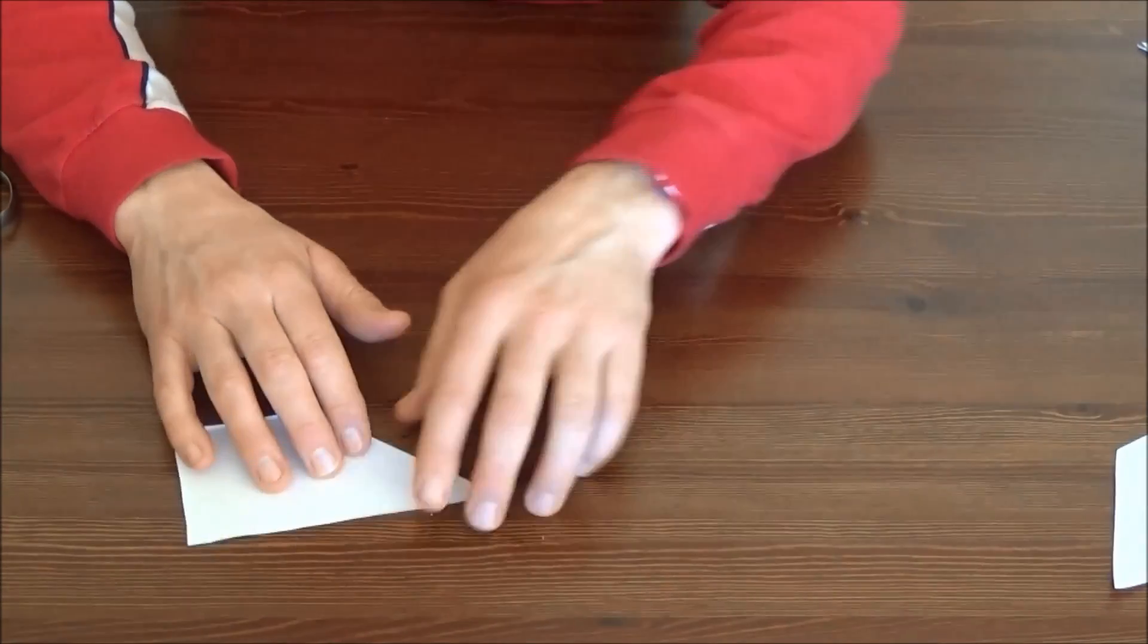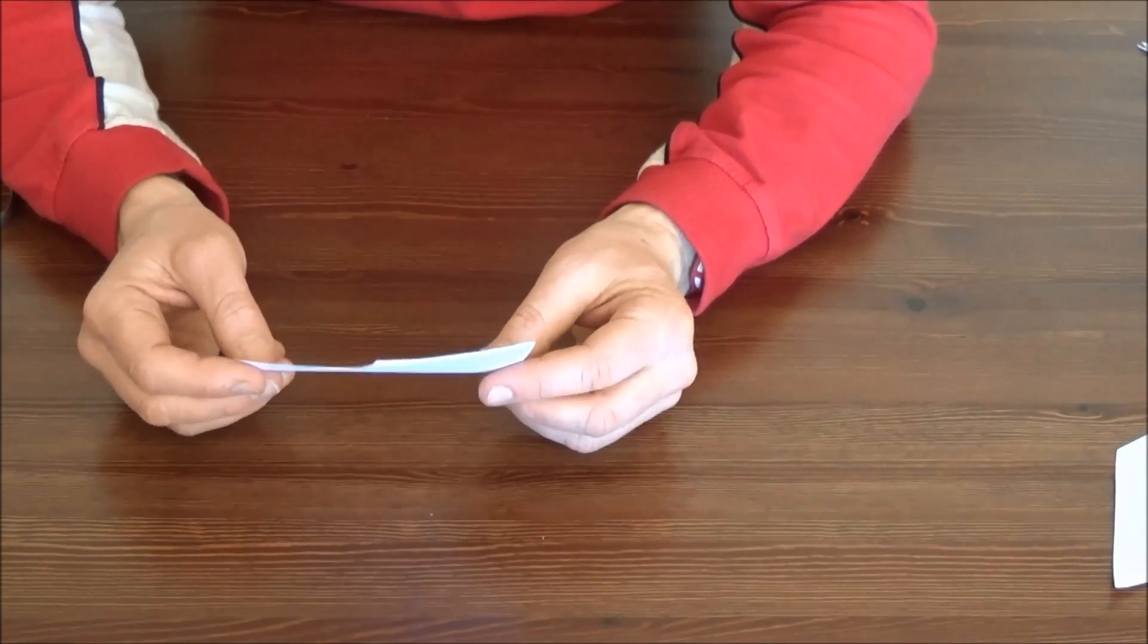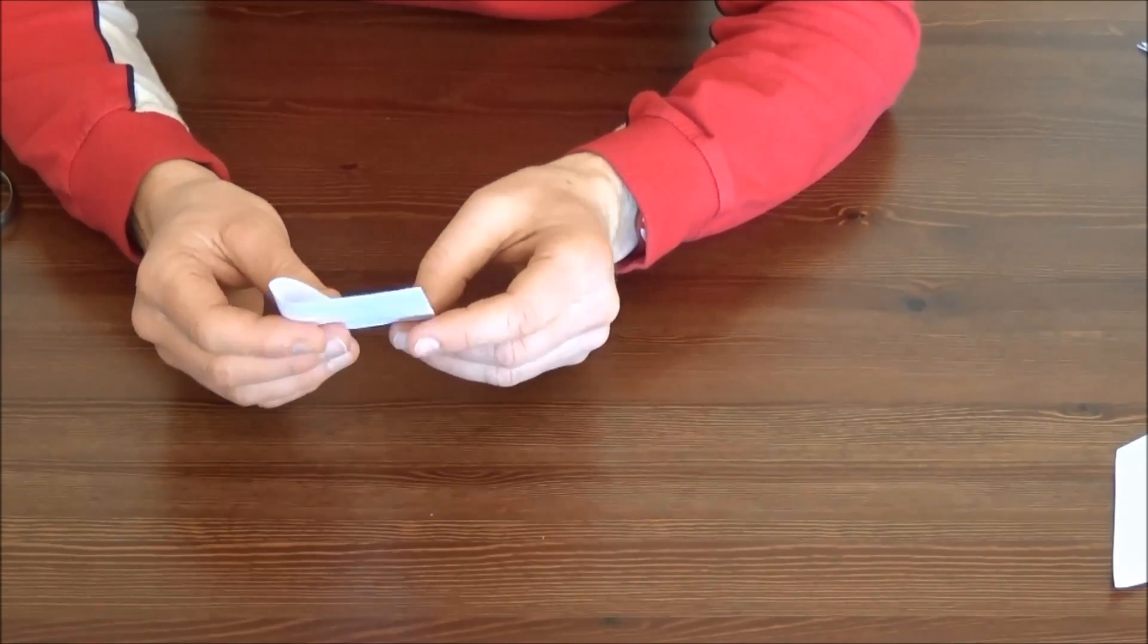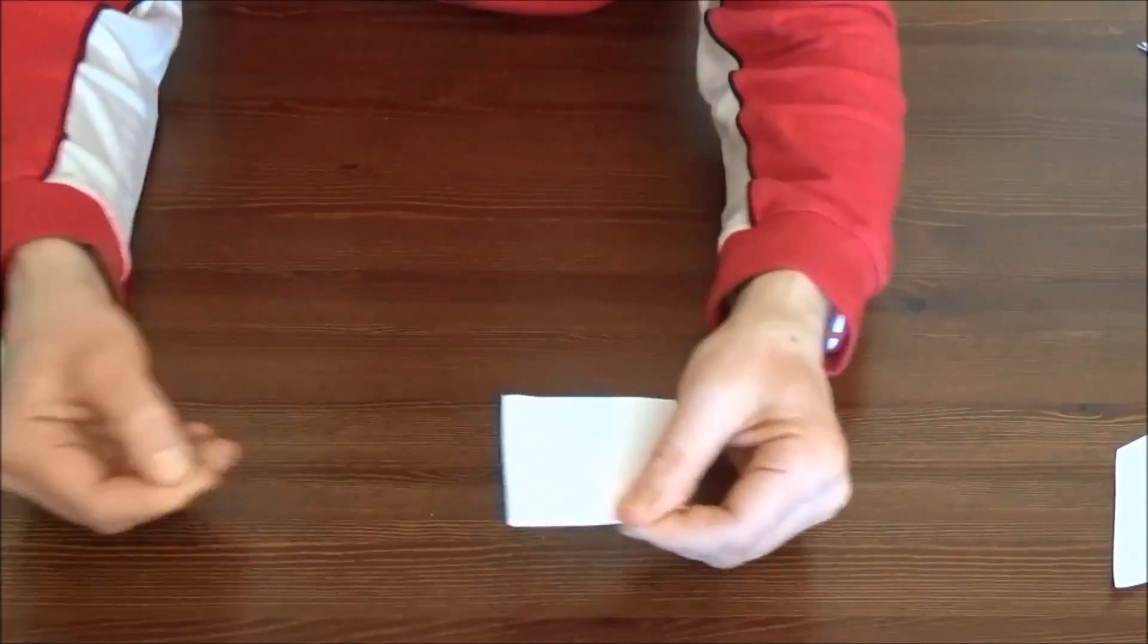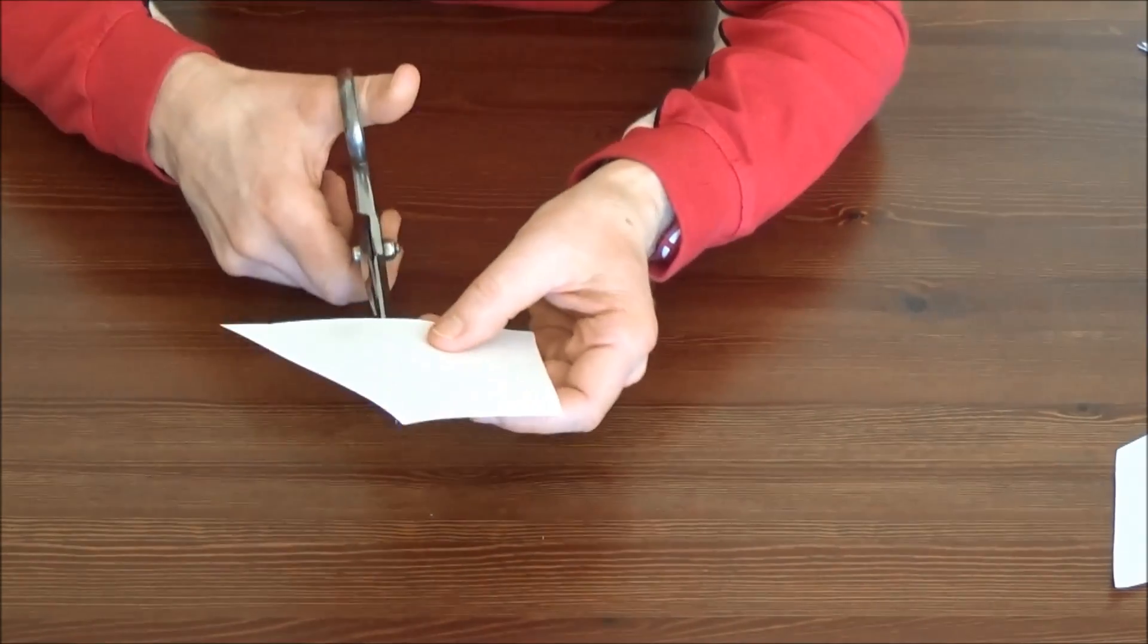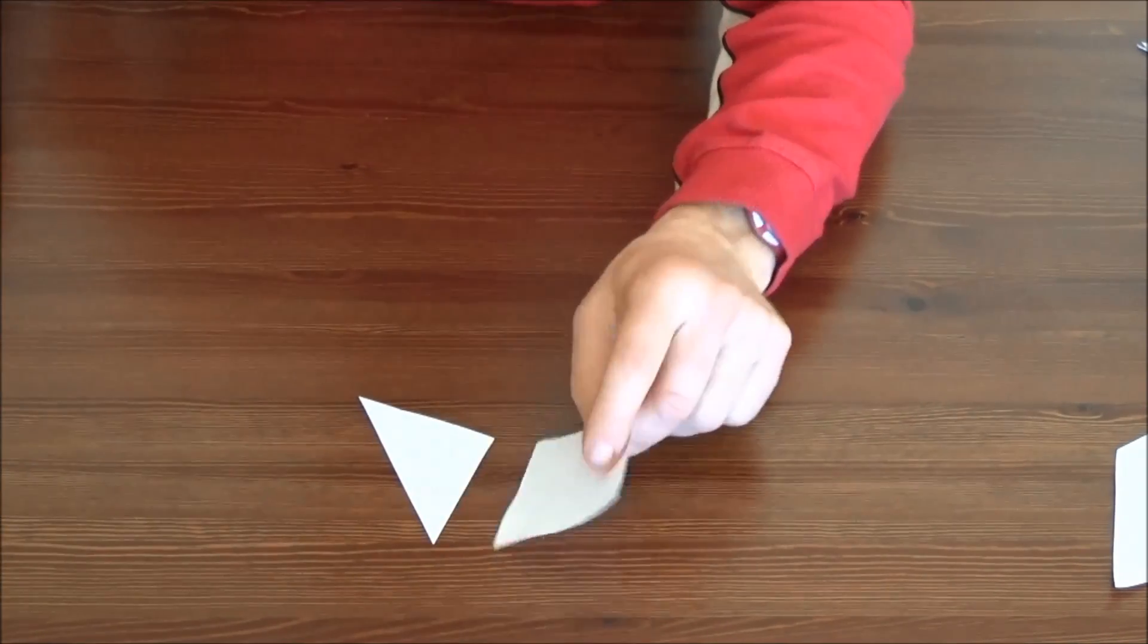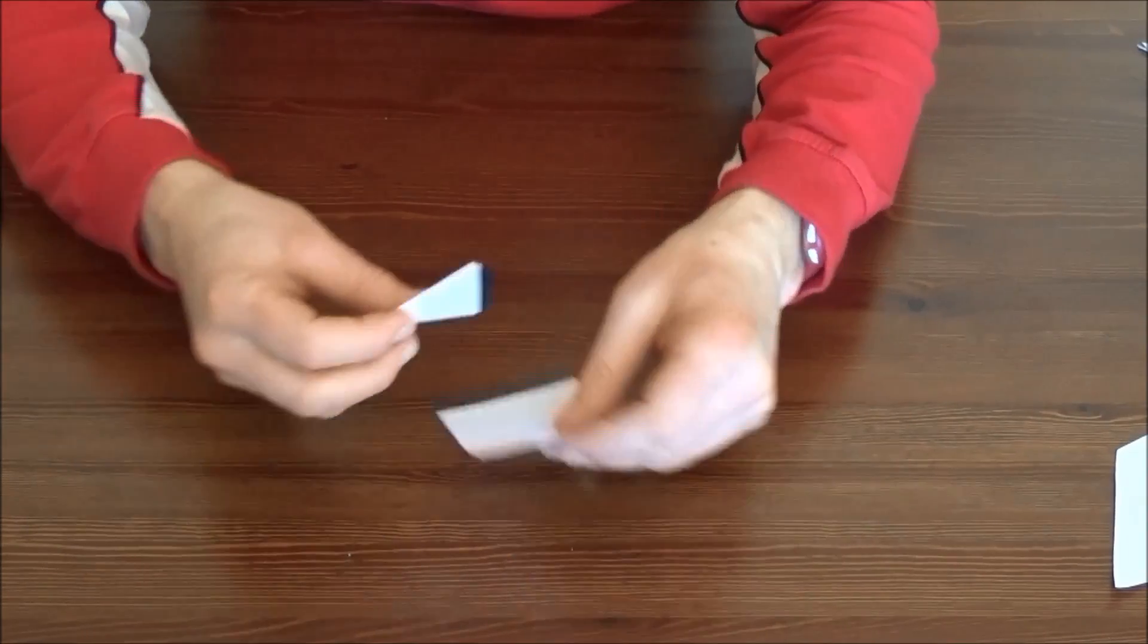Take one smaller trapezoid and fold it so that the two vertices at the ends of the longest side meet, like so, then cut along that crease. Now you've formed a small square and a small triangle. Set these aside.